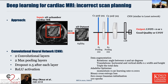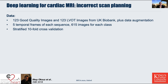As data, we used 123 good quality images from UK Biobank. We could have used thousands more good quality images, but we also found 123 LVOT images contained in UK Biobank despite its good quality control. We applied normal data augmentation — rotation and translation of the input images to generate more samples. We also used five temporal frames of each sequence, giving us 615 images per class. We applied stratified 10-fold cross-validation for thorough testing.